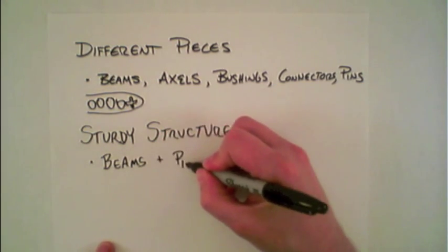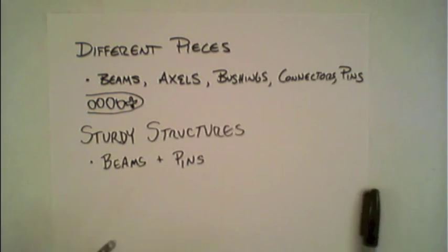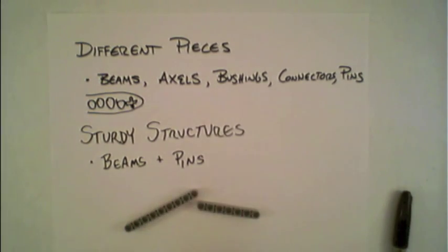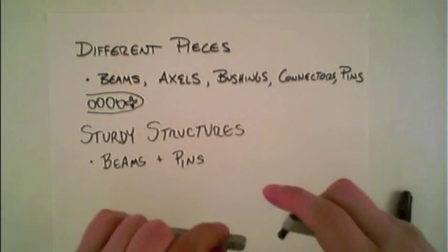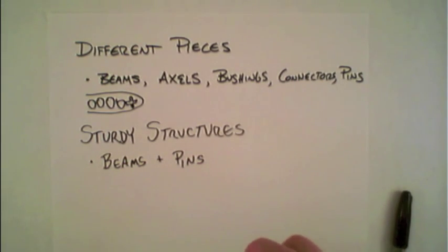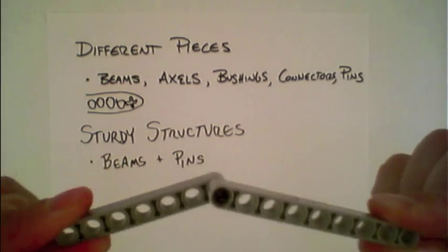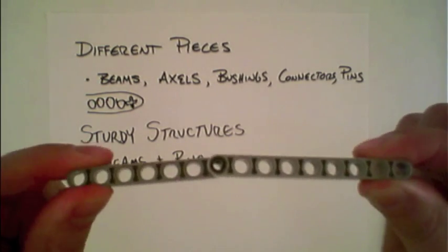First we'll talk about using the beams and pins. So when combining beams together and using the little black connector pins, if you connect it with just one pin, you find that the beam rotates freely and is not very structurally sound.